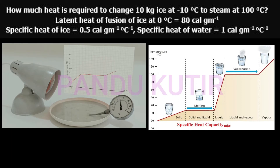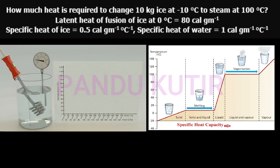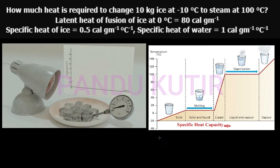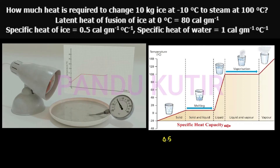The initial temperature is minus 10°C. The graph will start from minus 20 to 0 degrees centigrade. The slope represents the solid phase — this is ice. The specific heat capacity of ice is 0.5 calories per gram per degree centigrade.